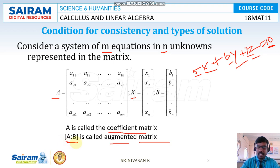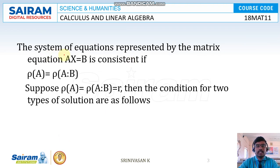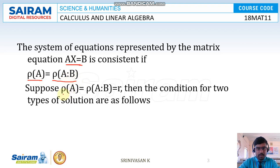The system of equations is represented by the matrix equation Ax = B. If rank of A equals rank of [A|B] equal to r, then the condition gives two types of solution, as follows.